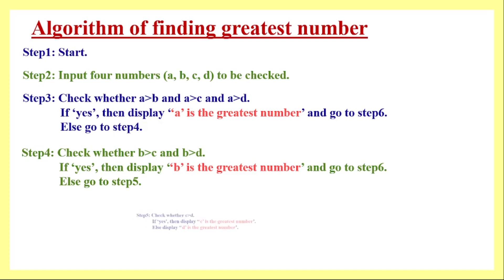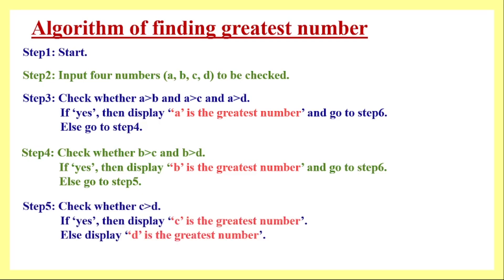If step four fails, we go to step five and check number three with respect to number four only — not with respect to number one or number two. If the result is yes, then C is the greatest number and we print the message. If it fails, we are left with only one number, D, so our conclusion is that D is the greatest number. We have checked all cases and stop execution.